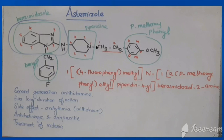The fourth portion of piperidine is attached with the benzimidazole-2-amine. The first portion of piperidine is connected with ethyl, and the second carbon of ethyl is attached with para-methoxyphenyl.